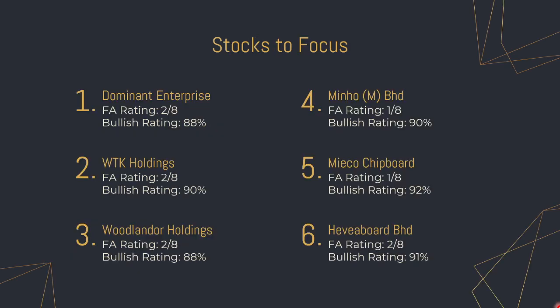We're going to look at six stocks from the wood and furniture sector. There are actually more counters in this industry, but today I'll focus on just these six. I've also added FA ratings and bullish ratings based on SmartRobic. For those using the SmartRobic app, you can access this information to check for good FA-rated counters.